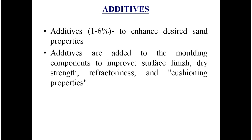Additives should be present in the base sand at about one to six percent to enhance the desired sand properties. Additives are added to the molding compound to improve surface finish, dry strength, refractiveness, and cushioning properties.